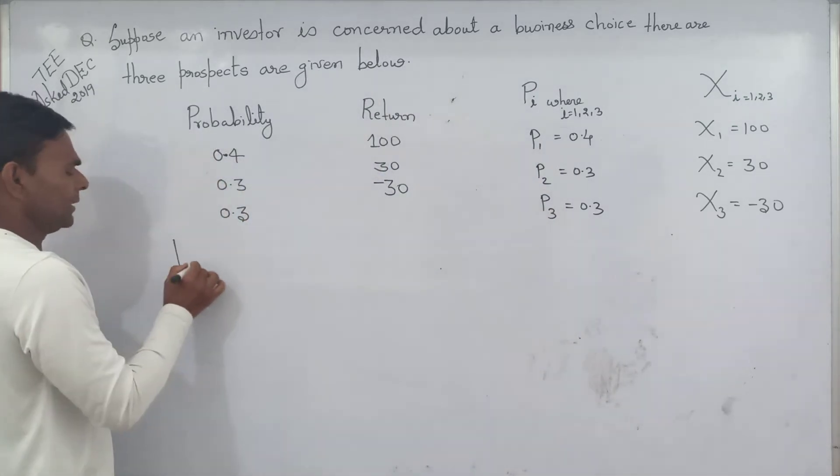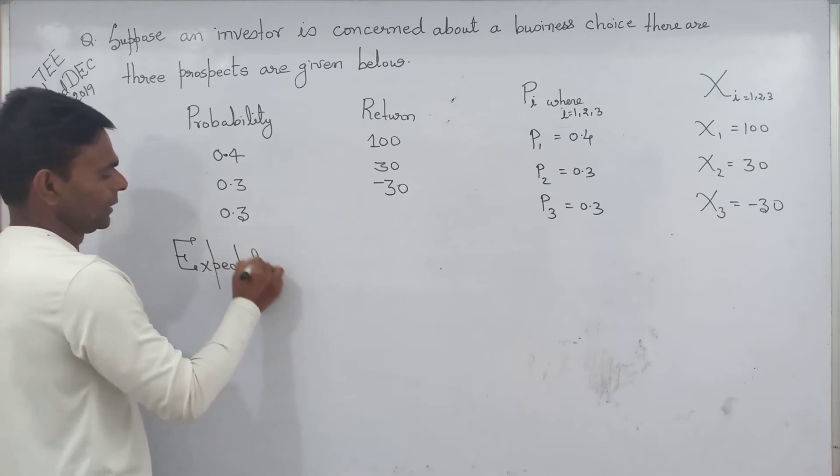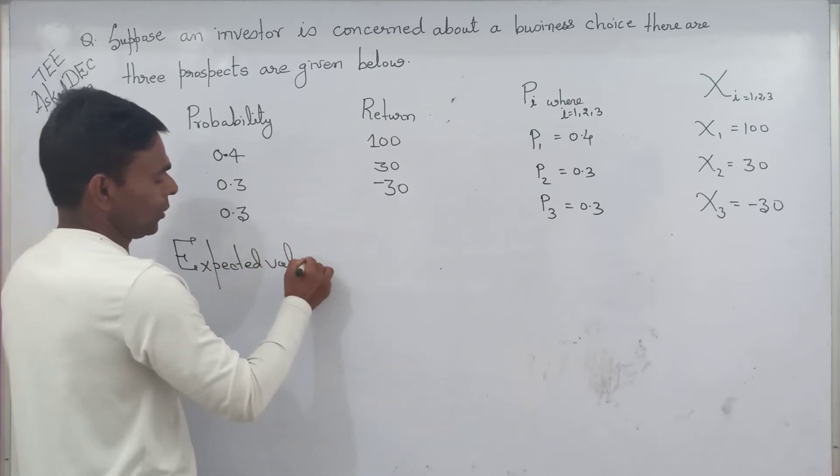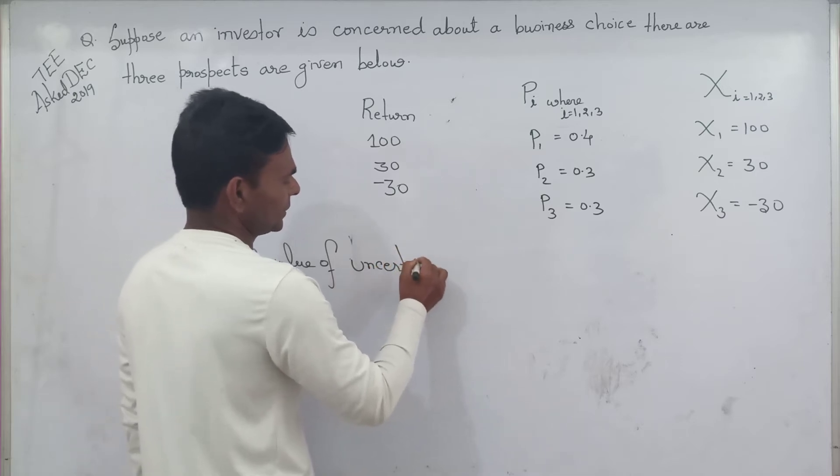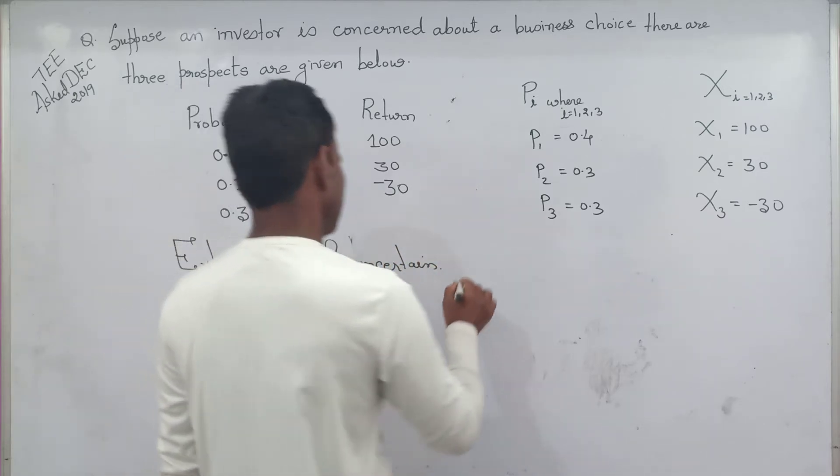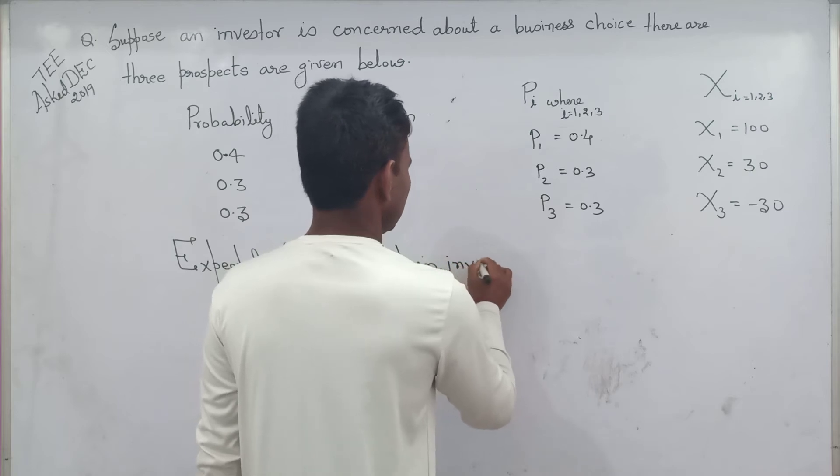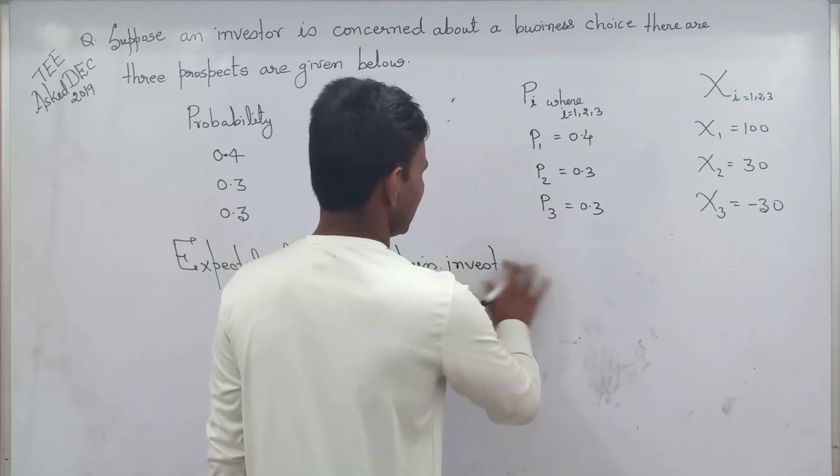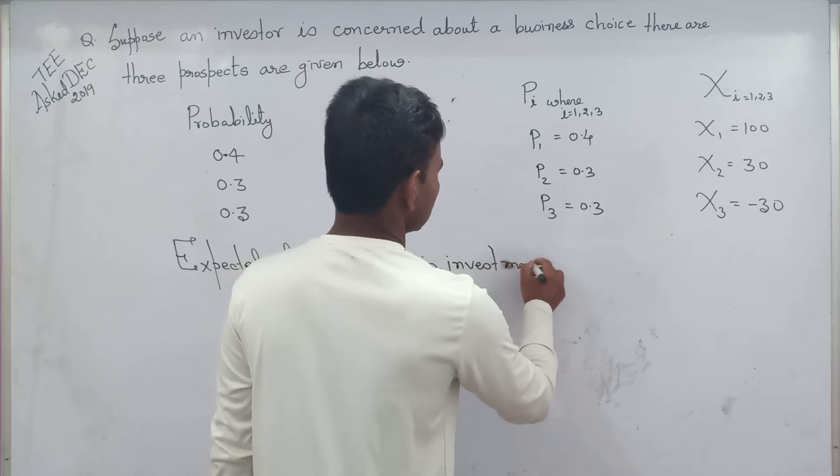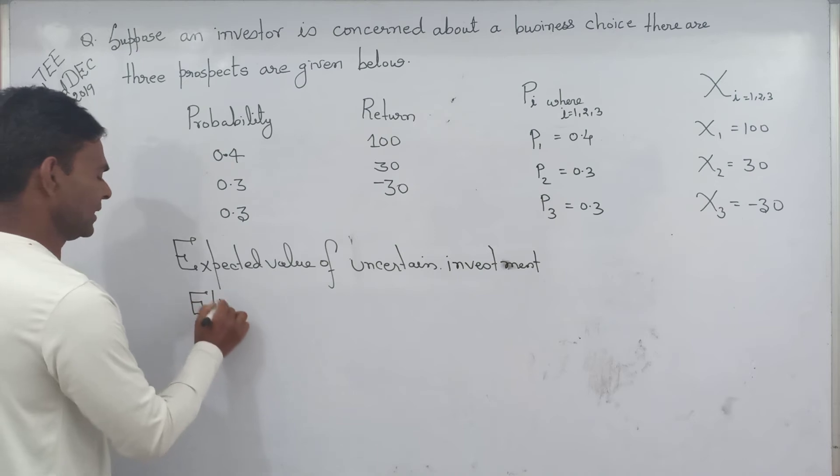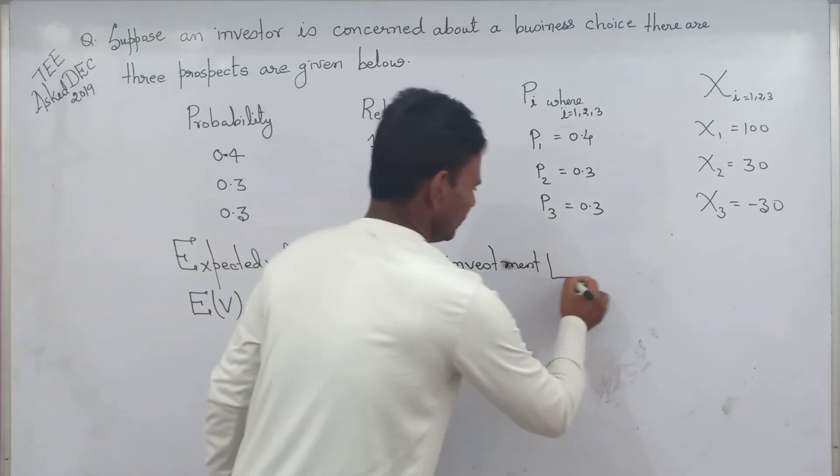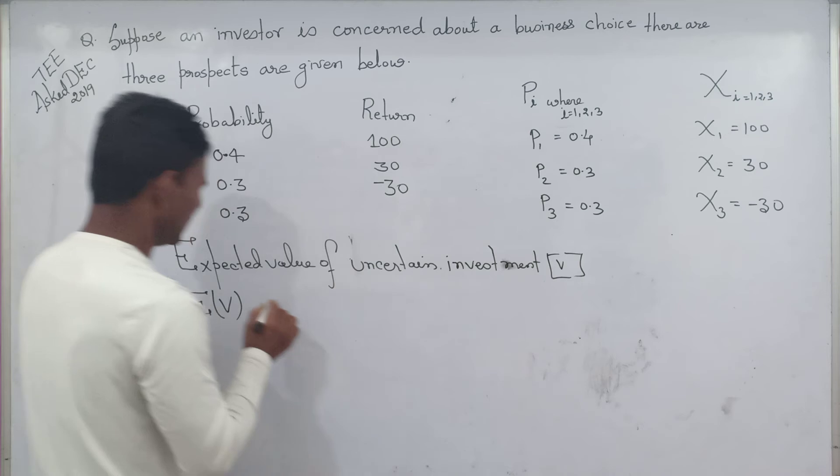Expected value of uncertain investment, which we can denote as expected value, we denote this as E(x). Simply p1 times x1 plus p2 times x2 plus p3 times x3.